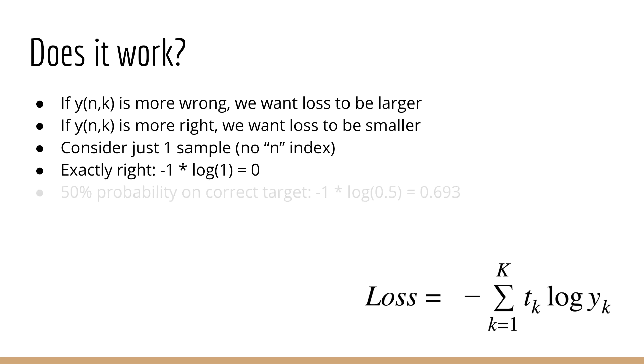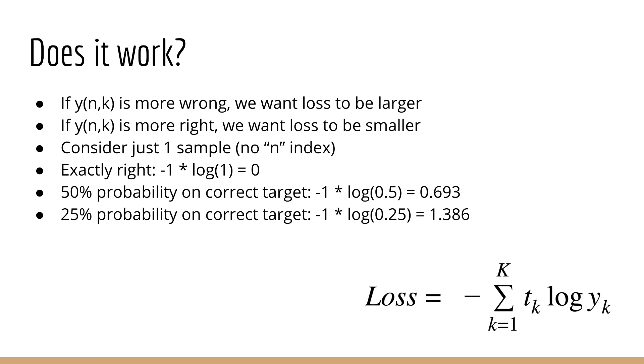Let's say now that we only give 50% probability to the correct target. Then we have 1 times log of 0.5 negated, which is 0.693. Now let's say we only give 25% probability to the correct target. Then we have 1 times log of 0.25 negated, which is 1.386. Finally, let's say we are completely wrong. We give 0% probability to the correct target. Then we have 1 times log of 0 negated, which is infinity. In other words, this is very similar to the squared error, where the worst value is infinity and the best value is 0. Therefore, it seems that this loss function works as expected.